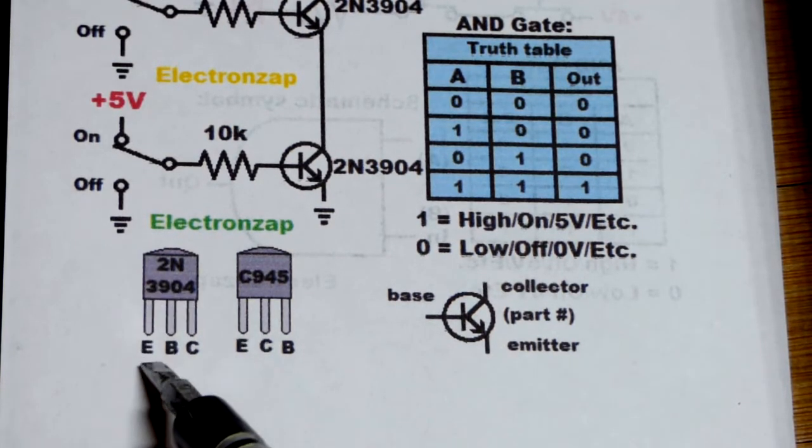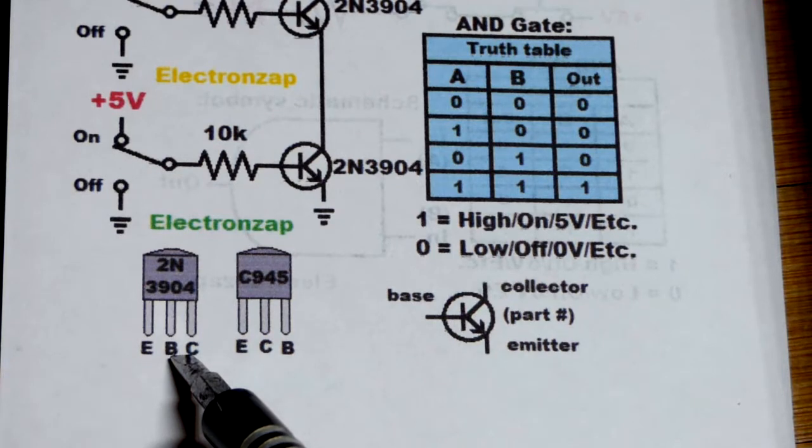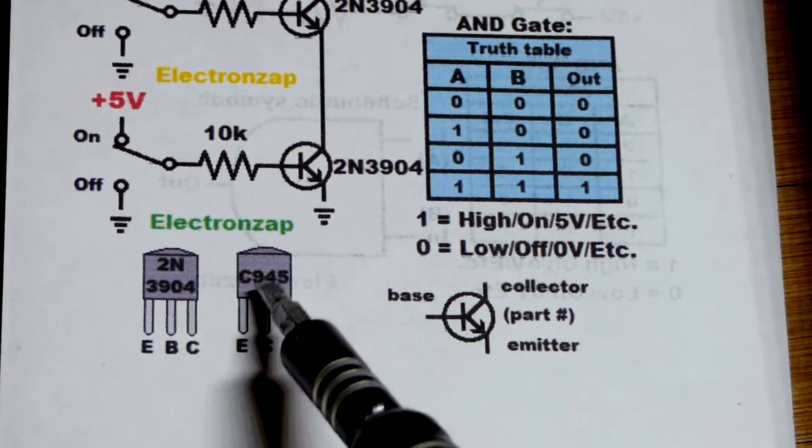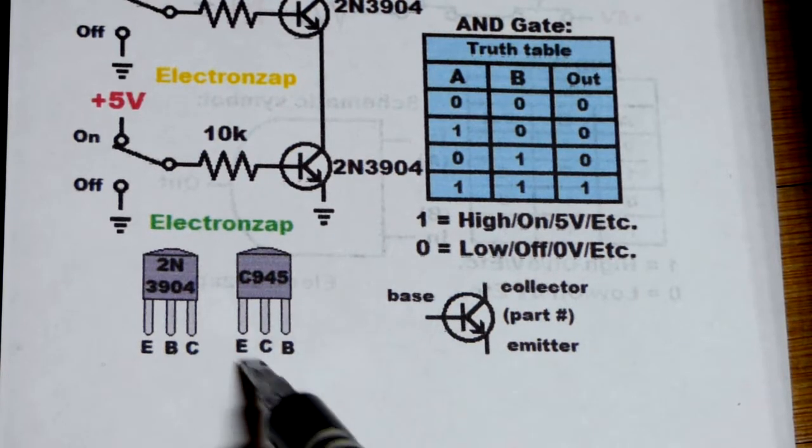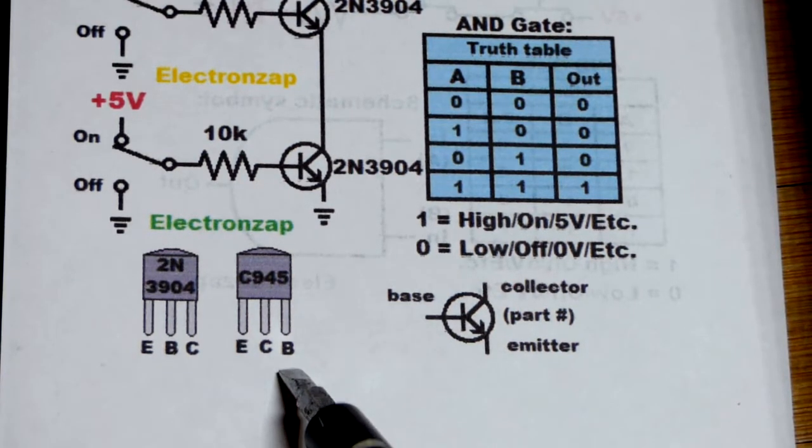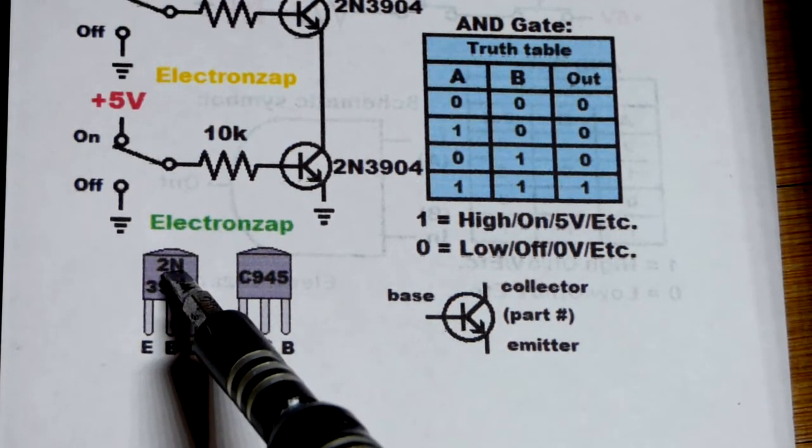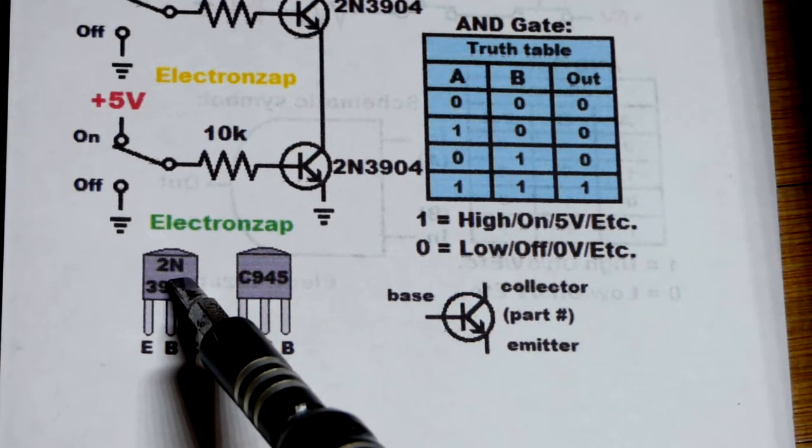So we have the 2N3904 emitter to the left, base to the middle, collector to the right. If you're using a different NPN bipolar junction transistor it will likely have a different pin layout. Unless it starts with 2N it'll probably have the same pin layout.